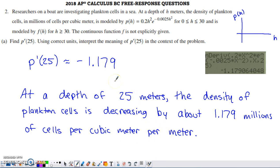And then what's the actual interpretation? Well, at the value that we put into the derivative, which is 25, and that's an h value, and that's measured in meters. So at a depth of 25 meters, the density of the plankton cells is decreasing by about this many million cells per cubic meter per meter.